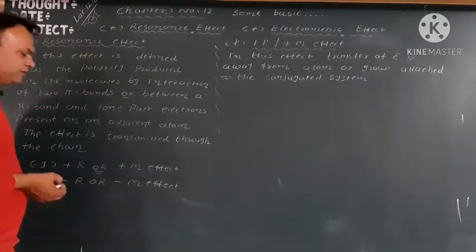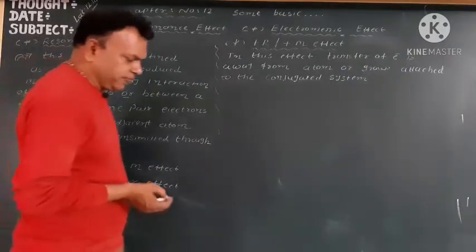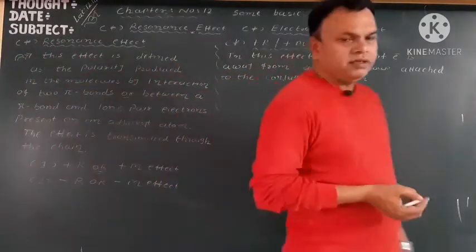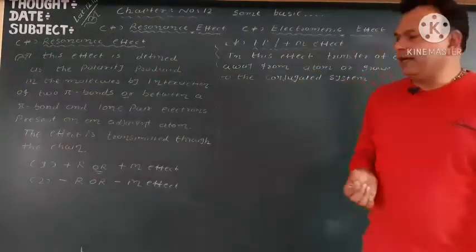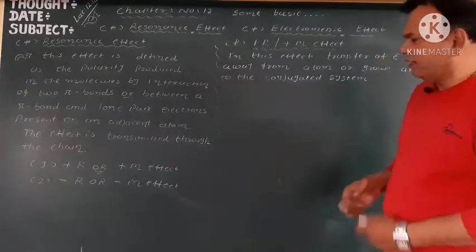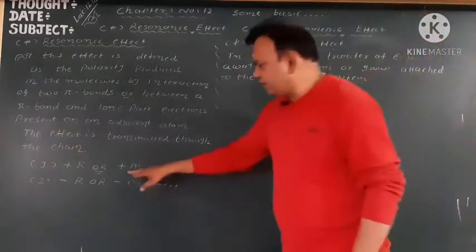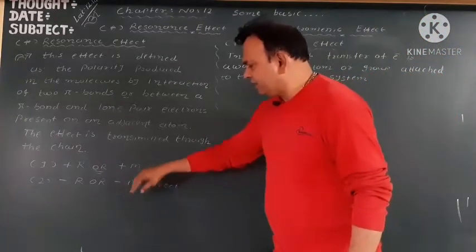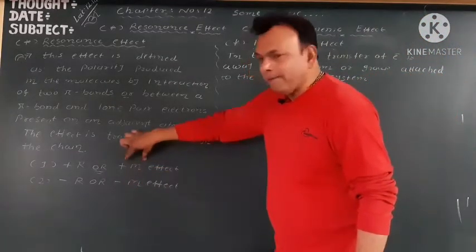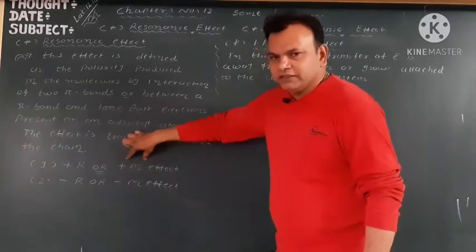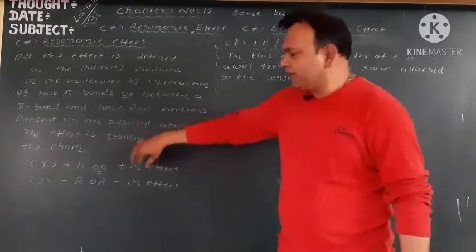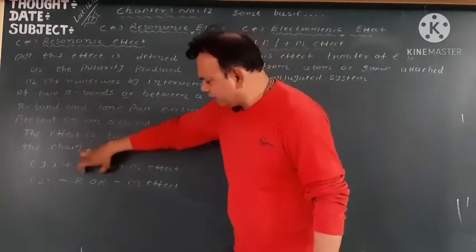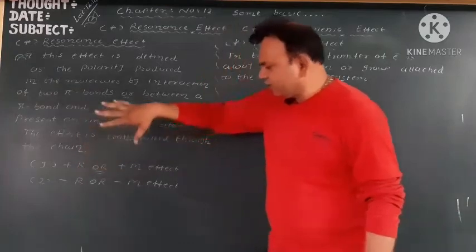Having two types of effect: plus R effect and minus R effect. Meinne ek aur likha hai plus M and minus M — that is called mesmeric effect. Yaha pe isko bolte hain resonance effect — same as resonance and mesmeric. Toh ye dikhe ki aromatic compound mein.